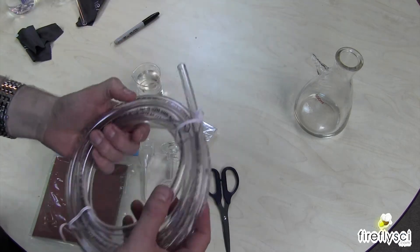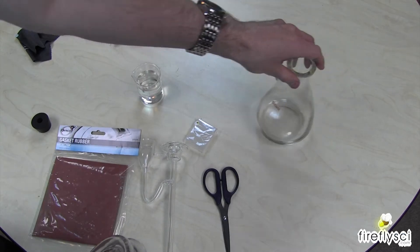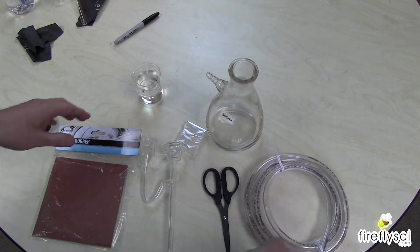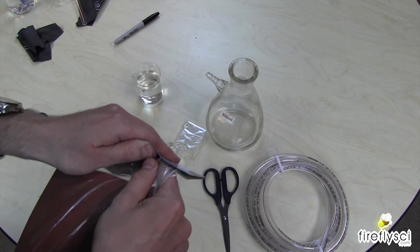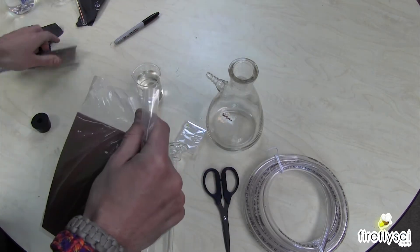I have some distilled water here, the tubing for the pump, and the vacuum flask is hanging out over there. So let's go ahead and start with making our gasket.